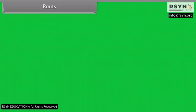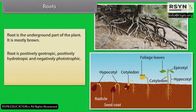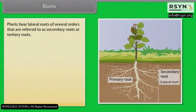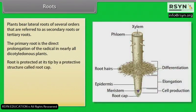Root is the underground part of the plant. It is mostly brown. Root is positively geotropic, positively hydrotropic and negatively phototropic. The branches of root arise from inner region, so it is endogenous. Plants bear lateral roots of several orders that are referred to as secondary roots or tertiary roots. The primary root is the direct prolongation of the radicle in nearly all dicotyledonous plants.